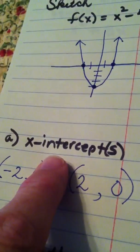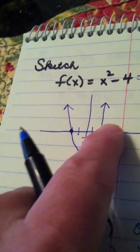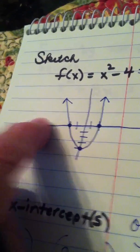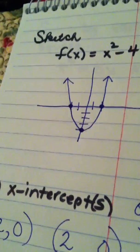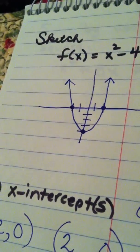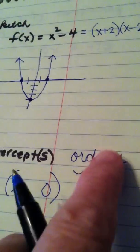Anytime somebody asks you for x-intercepts, look at the graph. Where does it cross the x-axis? It may not always have them, but in this case it has 2, and they are to be written as ordered pairs.